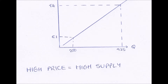Supply, like demand, can be shown on a supply curve. On our y-axis, just like with demand curves, we have price, and on our x-axis we have Q — in this case quantity supplied, the amount being supplied. Our supply curve slopes upwards from left to right.